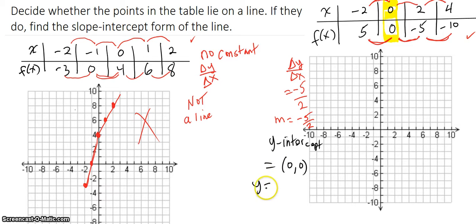So y equals mx plus b is the slope intercept form. So that's negative 5 halves x plus 0. Which just means that it's y equals negative 5 halves x. So that is the equation of the line. Now let's plot these points and see if they agree with that.